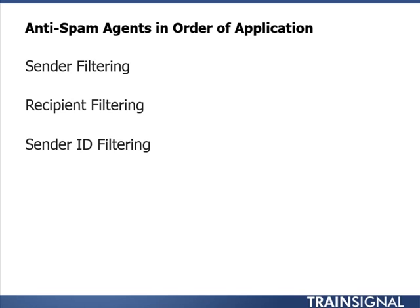The next one is Sender ID Filtering, intended to combat email spoofing and provide enhanced protection against phishing schemes. You use Sender ID to examine a sender's purported responsible address, or PRA. If the check fails, you can determine whether to reject or delete the message, or send it along with a stamped message of Sender ID results. That stamped result is actually utilized by content filtering to help make up the SCL, or spam confidence level.